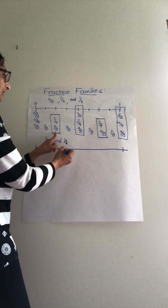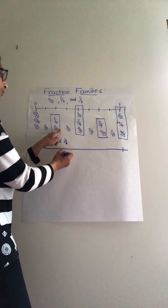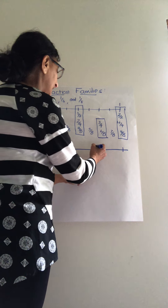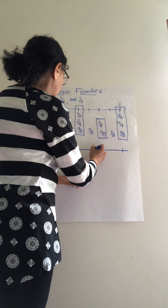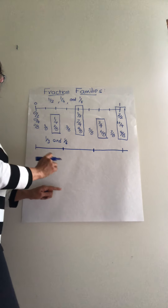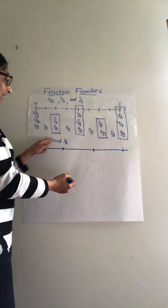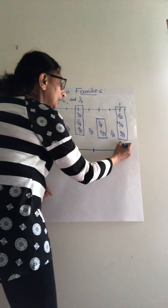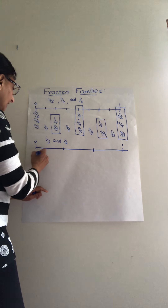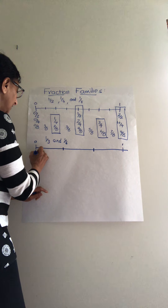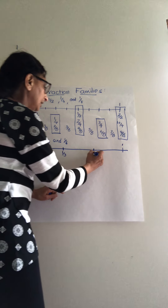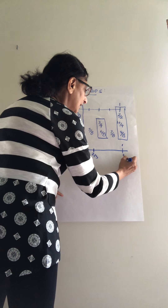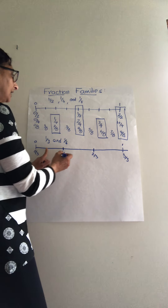If I cut exactly between two-eighth and three-eighth for one mark, and between five-eighth and six-eighth for another mark, I can see I have three equal parts. This gives zero-third, one-third, two-third, and three-third.